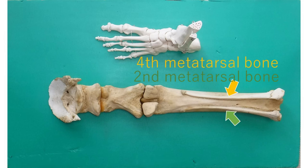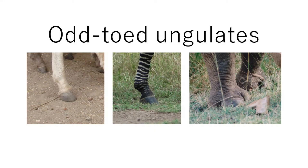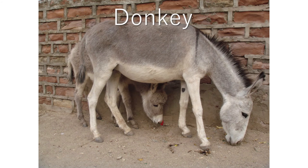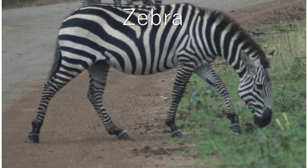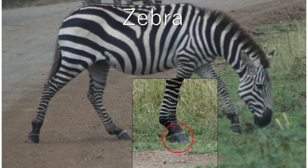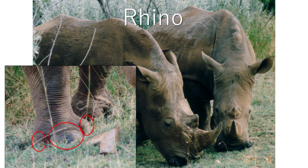The second and the fourth metatarsal are on the back. Let's look at other odd-toed ungulates. All of them bear their weight on odd-numbered toes: donkey, zebra, and rhino, which have three weight-bearing toes.